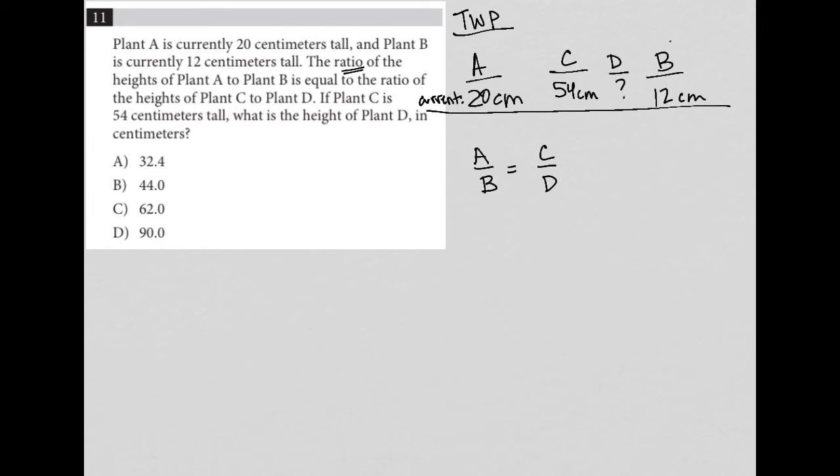So we have the information provided here. This is the info. And then here is the question that's been set up for us where we know that A is 20, we know that B is 12, we know that C is 54, but we don't know the height of D. I just filled in each of those letters based upon the information that was provided to me.